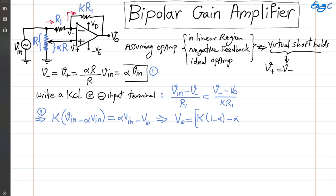Let me correct this. Moving Vout to the other side, we get Vout equals [alpha - K(1 - alpha)]*Vin. In summary, Vout over Vin is the gain.